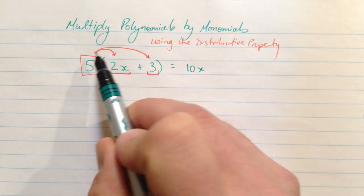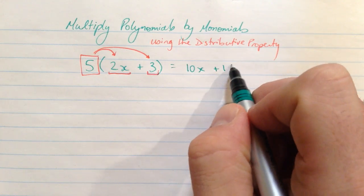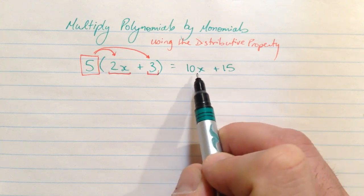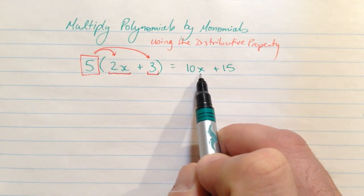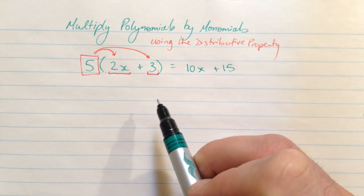We're going to do the same thing here, 5 times 3, and that's just positive 15, so we add 15. And there's nothing else to do here. This is in its simplest form because these are not like terms. They do not have the same variable component, and so we're done. That is as simple as that one can get.